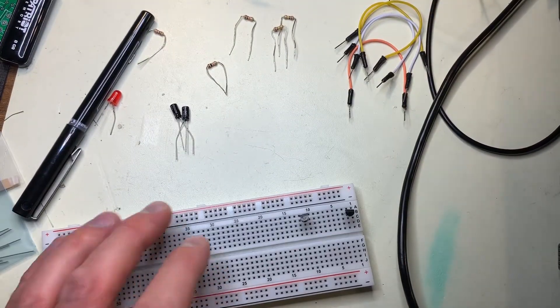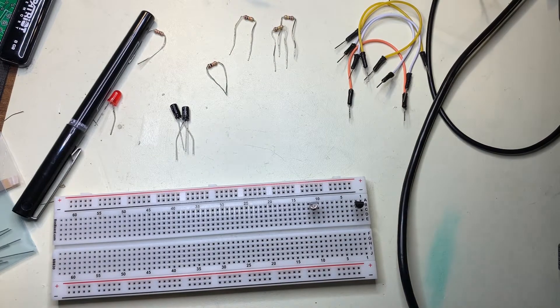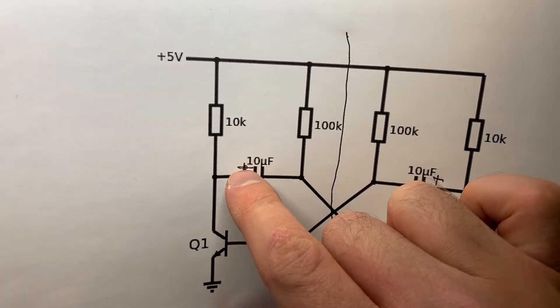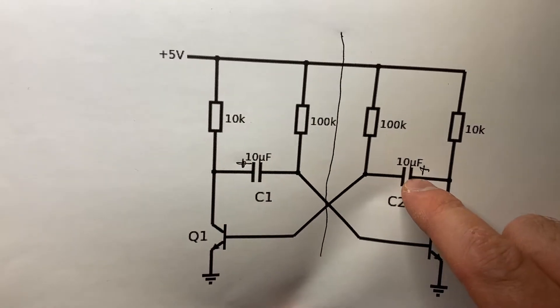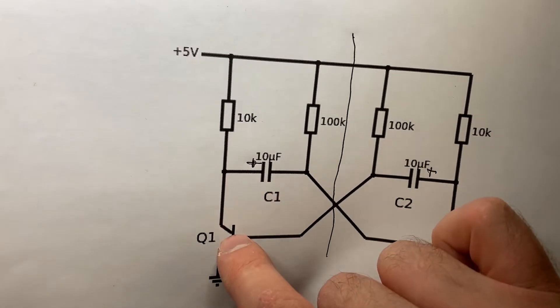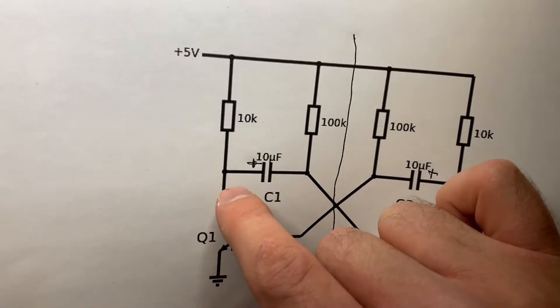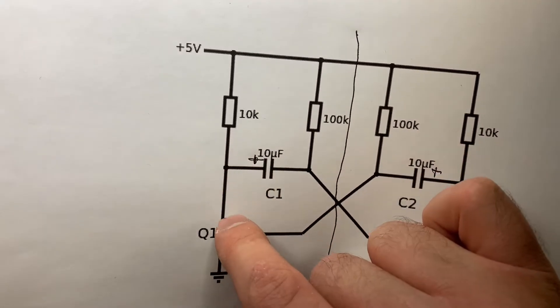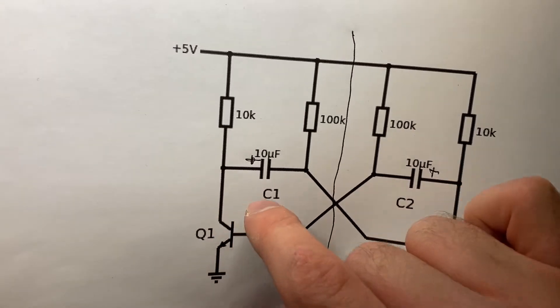Now we can wire in the capacitors, and for the sake of simplicity, or consistency, I'll just say that the positive of the capacitors is going to be going to the collector of the transistor. So you can see that this end of the capacitor is connected to this end of the transistor.